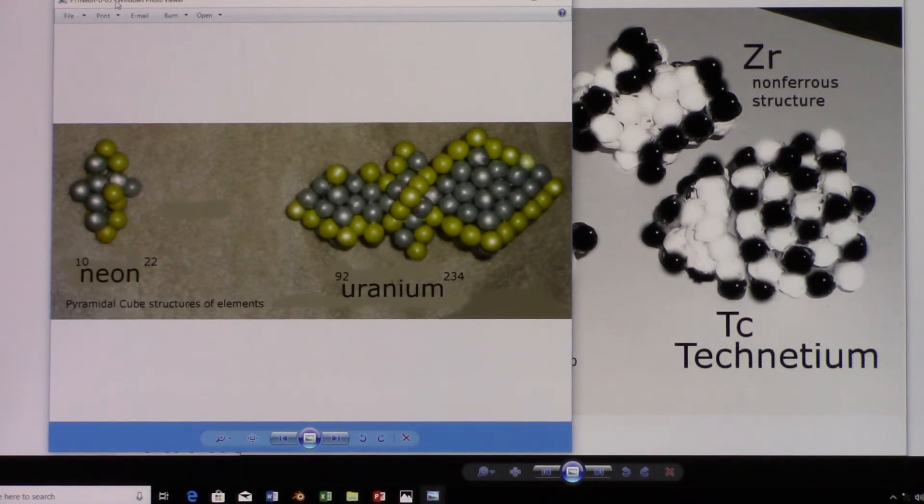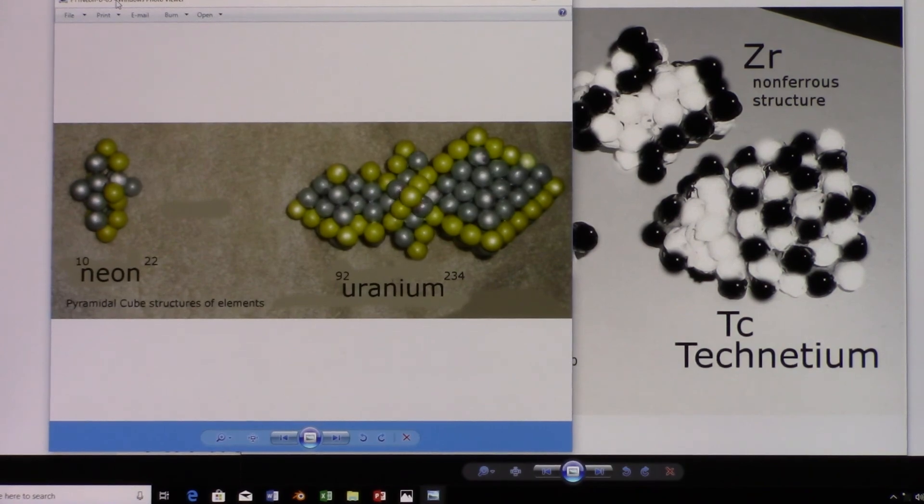Neon has a two-layer cube on it and it's stable. The cube three is stable, and the cube four is not stable. That solves the riddle of technetium: it's unstable because at the center of the nucleus is a four-layer cube of protons and neutrons.